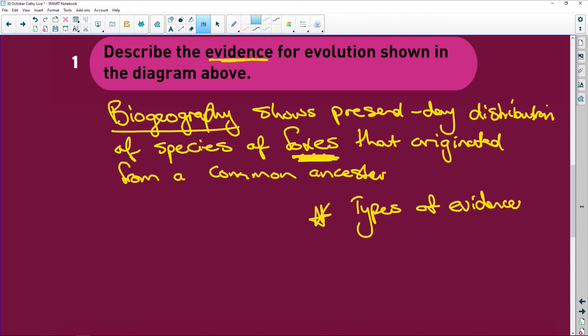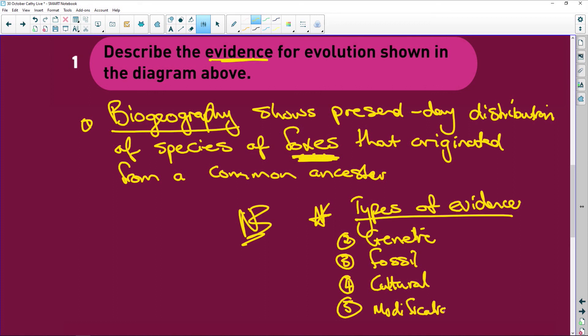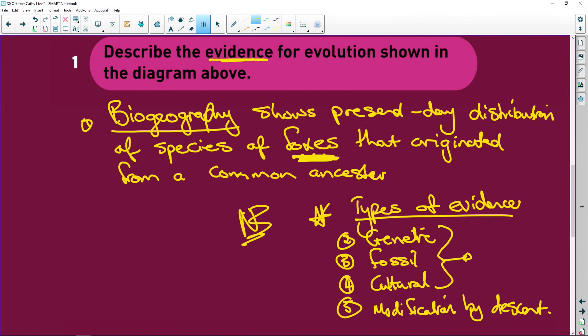I'm telling you this because it is important. Evidence. So your types of evidence: we have biogeography as number one, then we have number two, genetic evidence, number three, fossil evidence, number four, cultural evidence, number five, modification by descent. So that's when we have arms, a horse has front legs, a bat has wings, a chicken has wings that are flightless. Those are modification by descent. Genetic, fossil, and cultural would apply to our hominid process. For animals we look at biogeography and modification by descent. You must know your types of evidence, people.